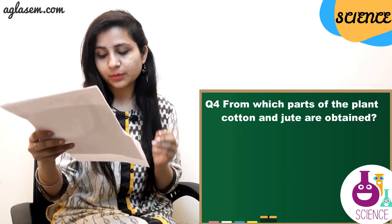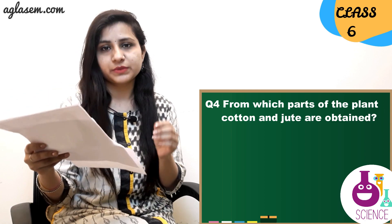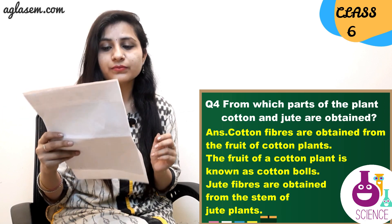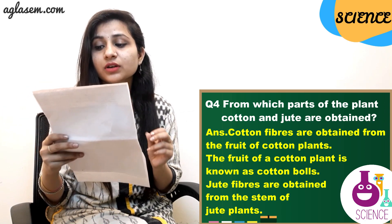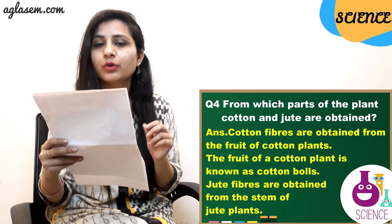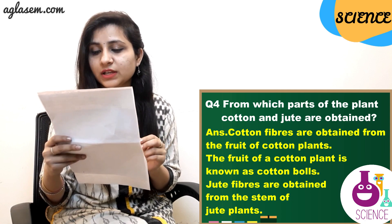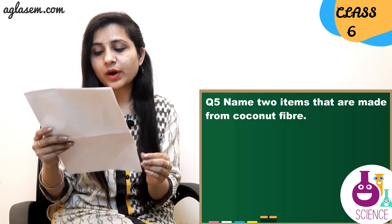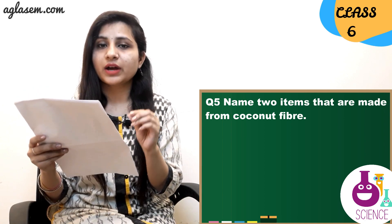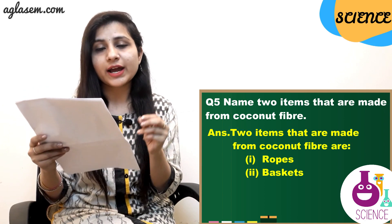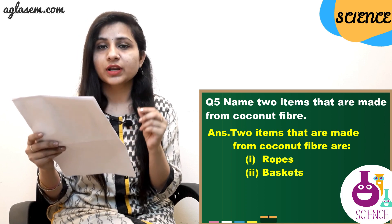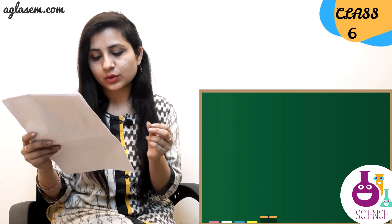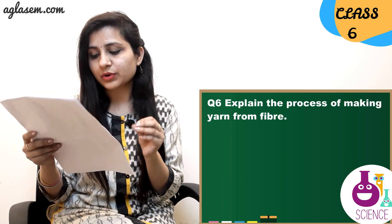Question 4: From which parts of the plant are cotton and jute obtained? Cotton fibers are obtained from the fruit of the cotton plant. The fruit of a cotton plant is known as cotton bolls. Jute fibers are obtained from the stem of jute plants. Question 5: Name two items that are made from coconut fiber. The answer is: roofs and baskets.